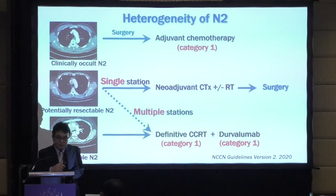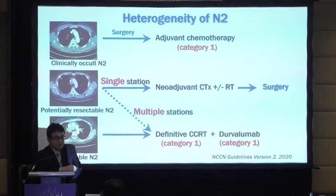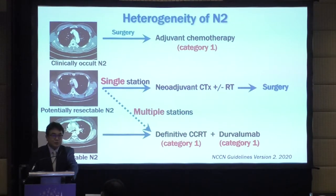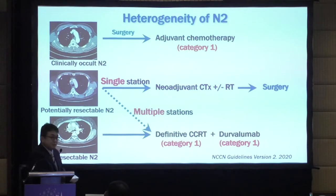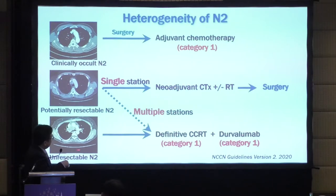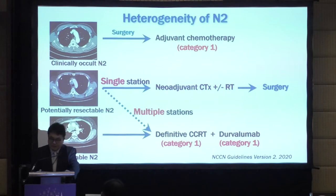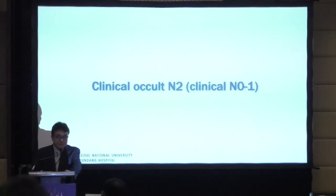3A4 is the bulky or fixed multi-station N2, considered as mediastinal infiltration N2, and this is usually unresectable. Clinically occult N2 usually receives adjuvant chemotherapy. Potentially resectable N2, if single station, we do neoadjuvant therapy followed by surgery. Sometimes multi-station or unresectable N2 goes to definitive chemo or chemo-radiation therapy.